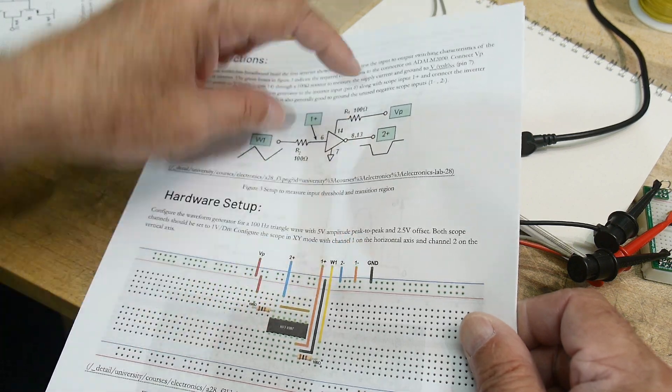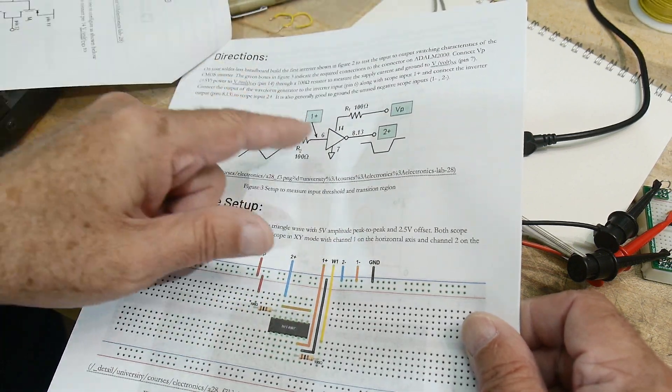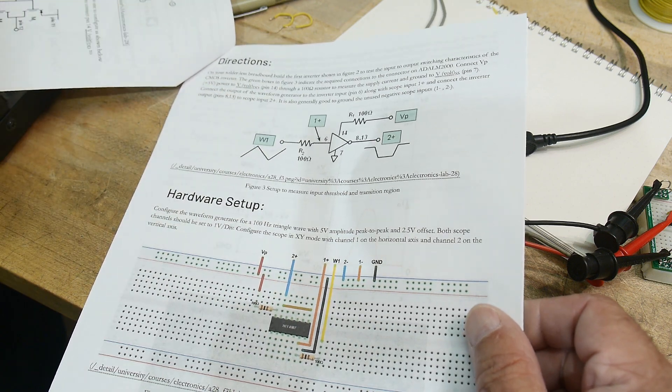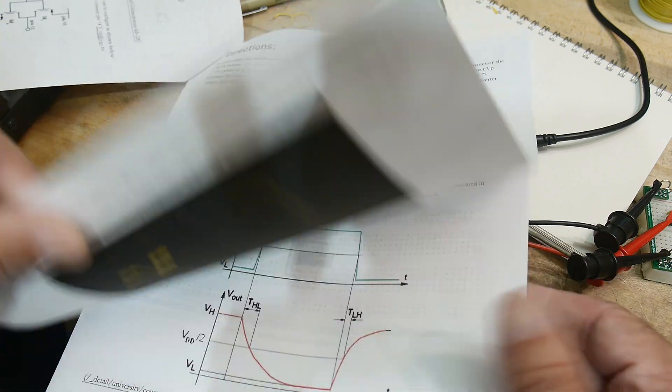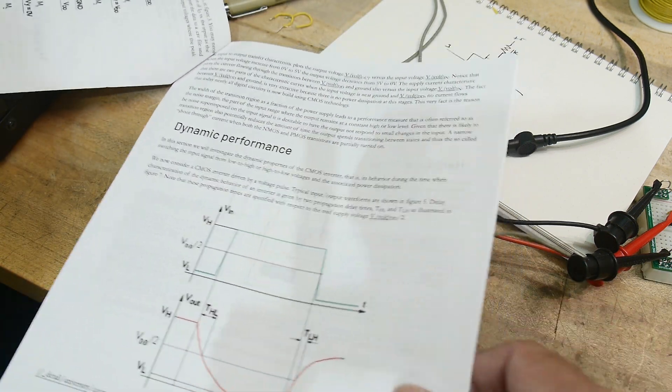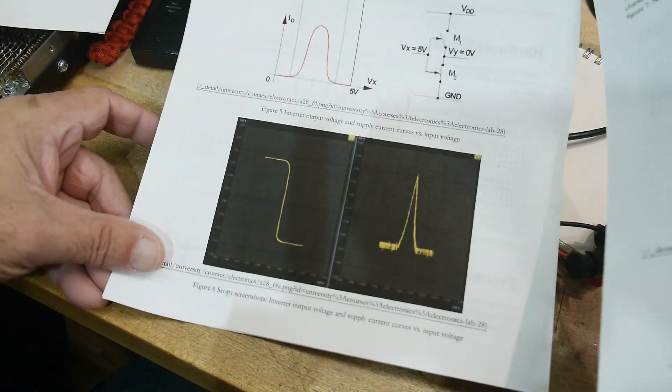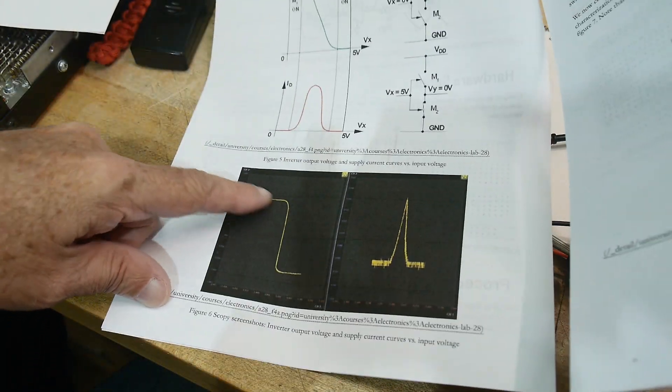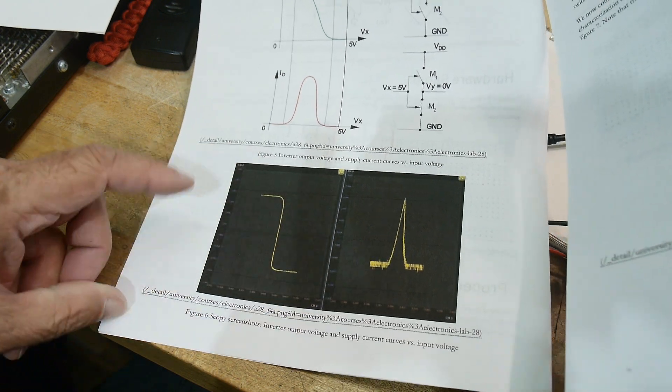They put in this 100 ohms here so you can measure the voltage across that to measure the current. When this thing switches, there's a current spike, as with all CMOS devices. So you can learn a lot about how CMOS works just by studying this. So here's a step edge, but here's the current spike. When it goes through transition, you get a spike in current.